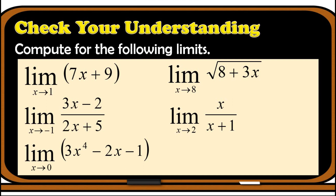Let's check your work. First, the limit is 16. Second, the limit is negative 5 over 3. Third, the limit is negative 1. Fourth, the limit is 4 square root of 2. And the fifth item, the limit is 2 thirds. Did you get all of these answers correctly? If yes, great job.